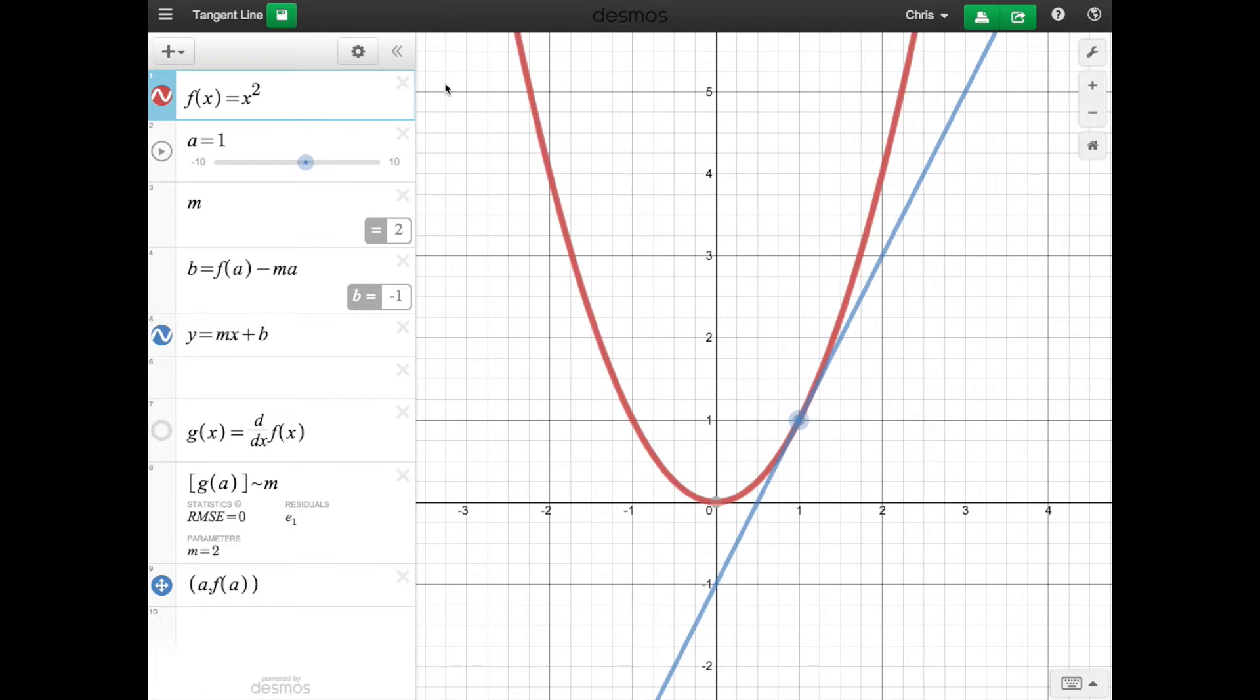And what it would do, it shows the x squared, and then it shows the tangent line for whatever value you want for x. So in this case right now, this a is equal to 1. This is the value for x at this point.